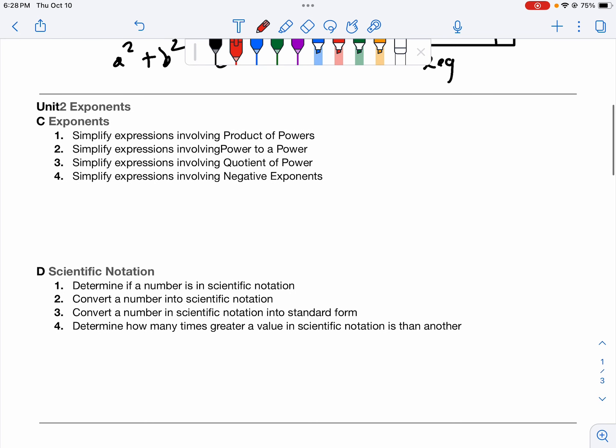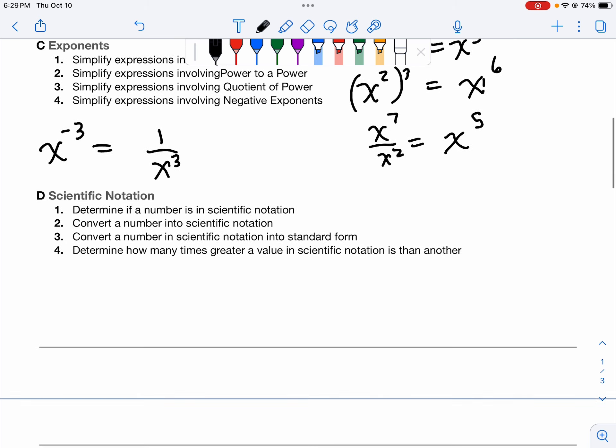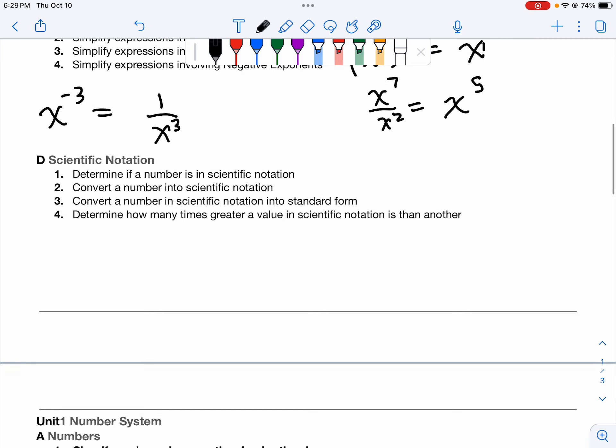We just talked about exponents. The first exponent rule is product of powers. That would be things like x squared times x cubed would equal x to the fifth. Power to a power would be x squared to the third. We multiply here. That's six. Quotient of powers, that'd be like x to the seventh over x to the second, which would be x to the fifth. We subtract seven minus two. And then a negative exponent. If we ever have x to the negative third, I have to rewrite this as one over x to the third. And then scientific notation, a times 10 to the n, where a is between 1 and 10.